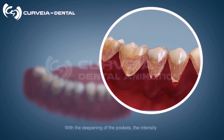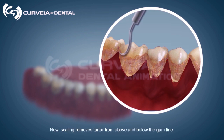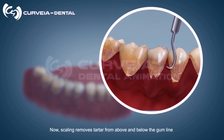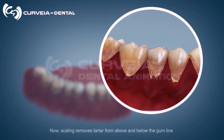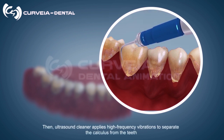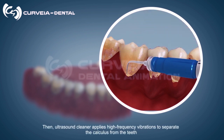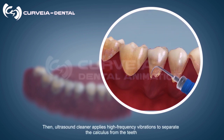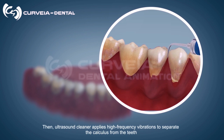Scaling removes tartar from above and below the gum line. Then an ultrasound cleaner applies high-frequency vibrations to separate the calculus from the teeth.